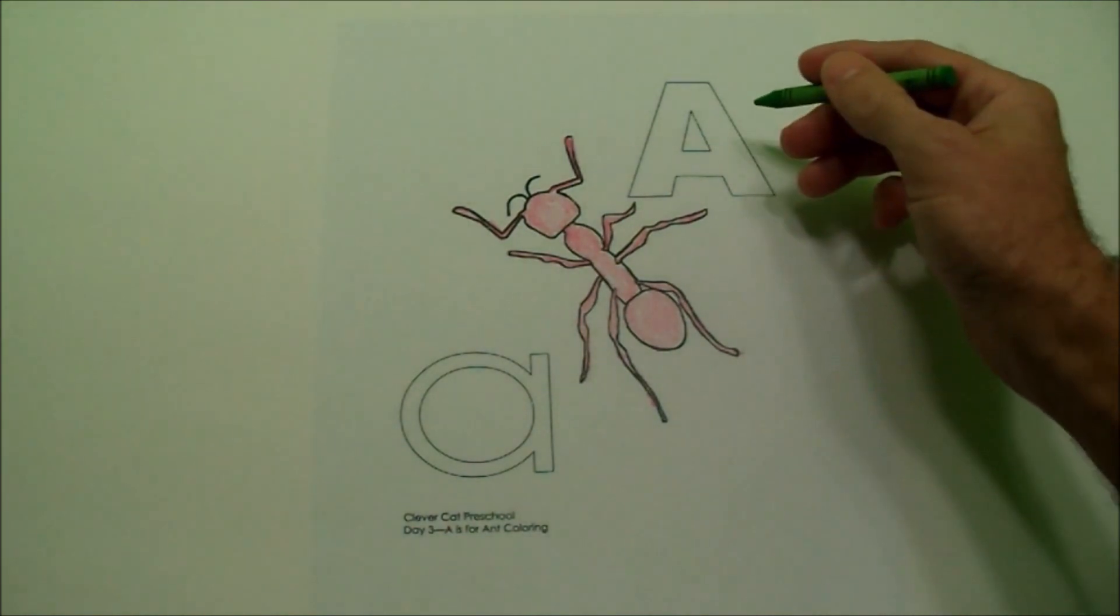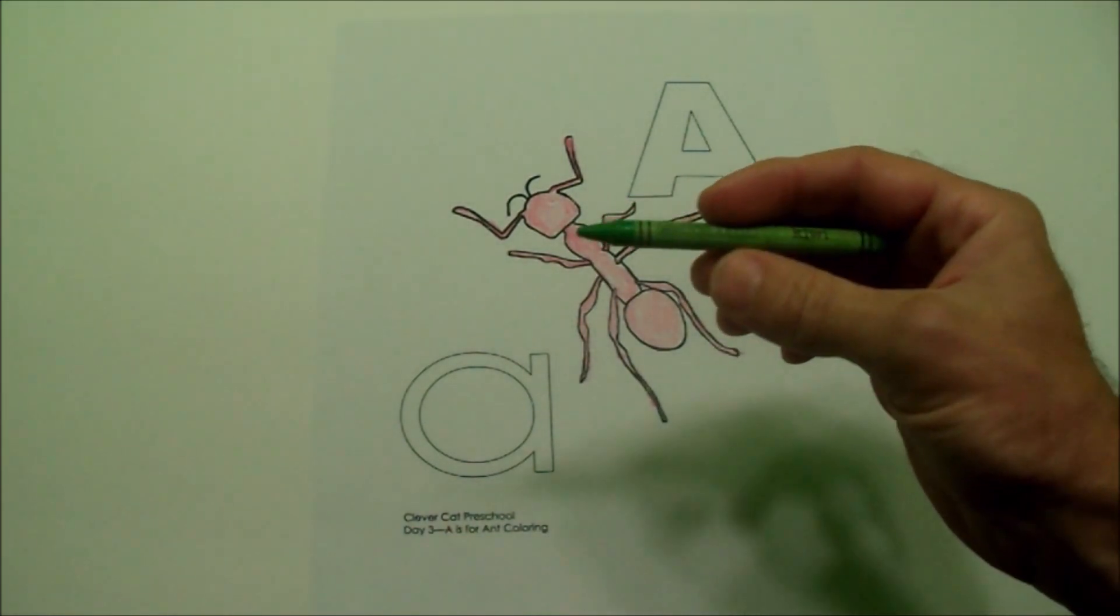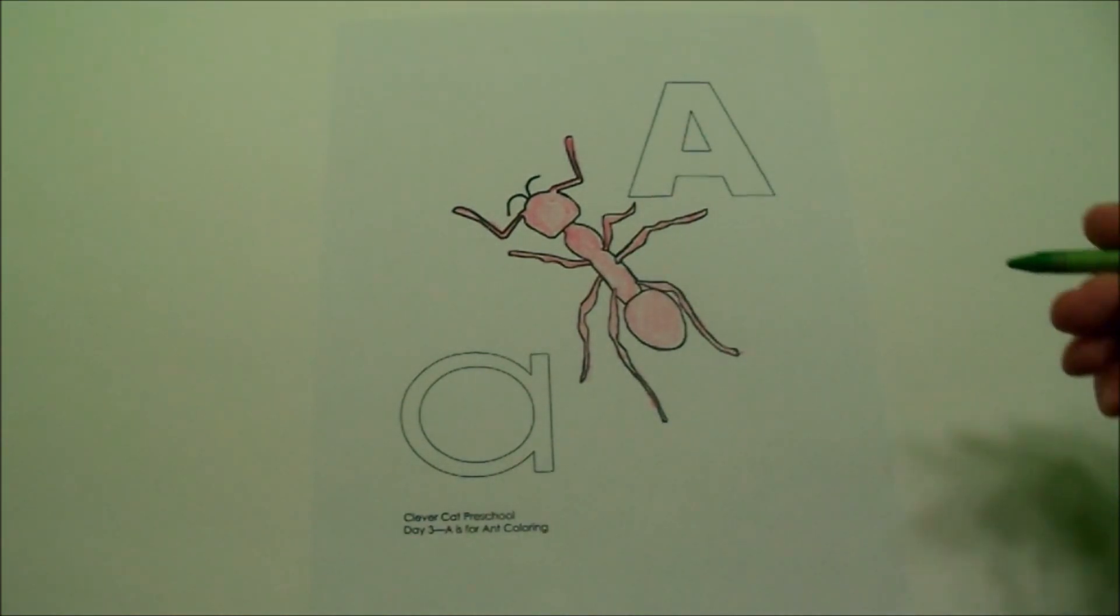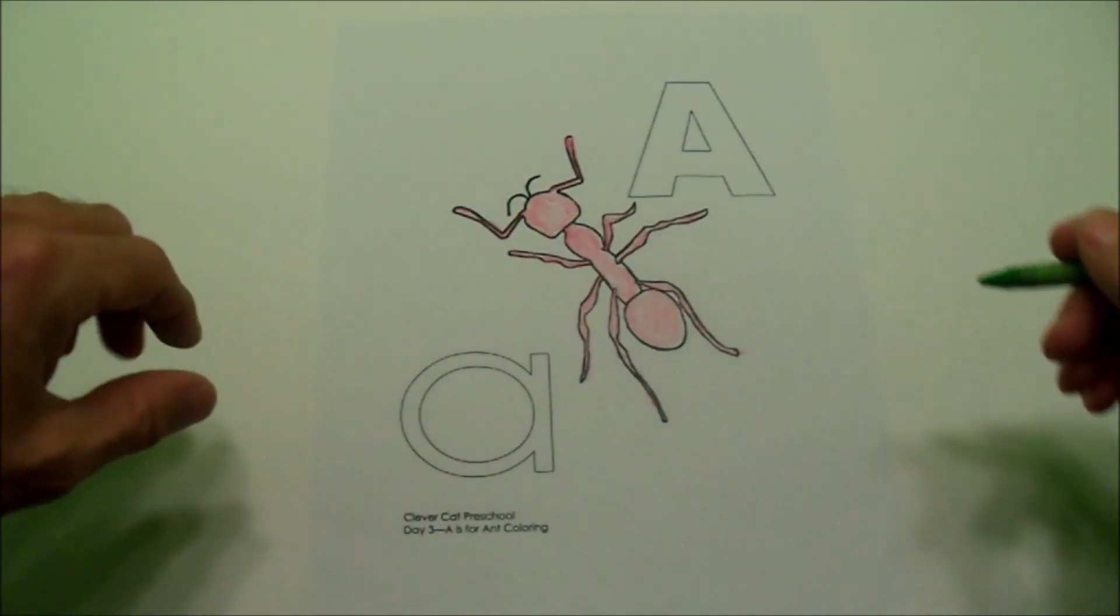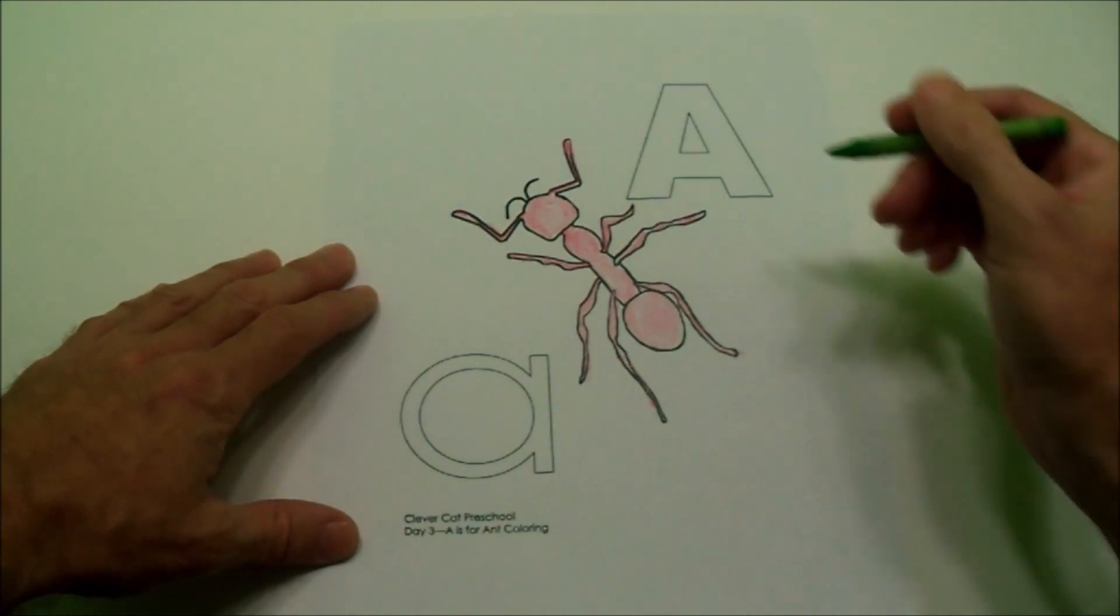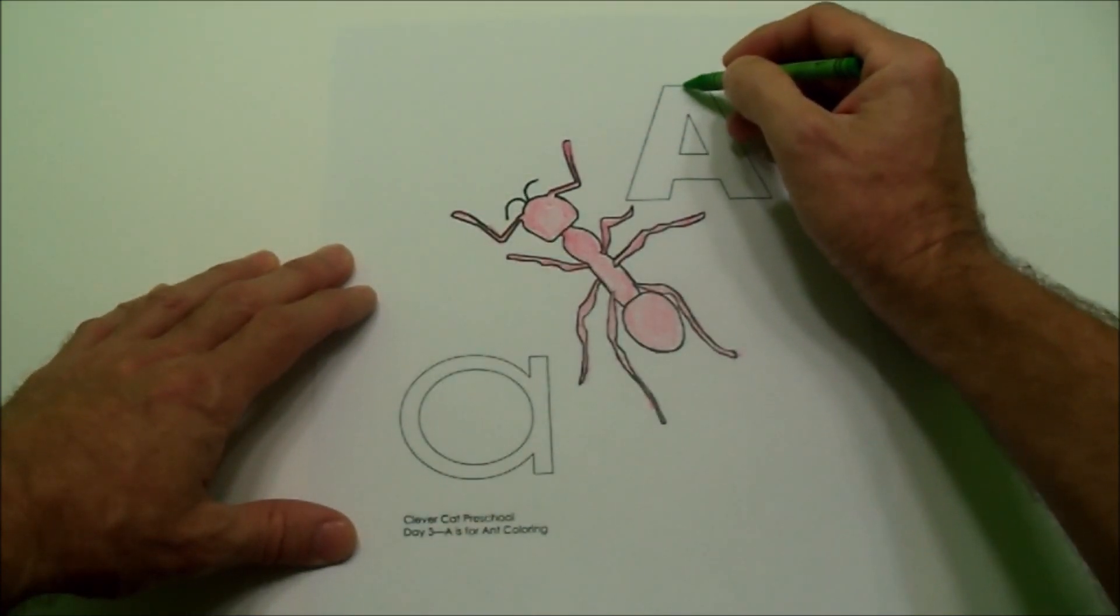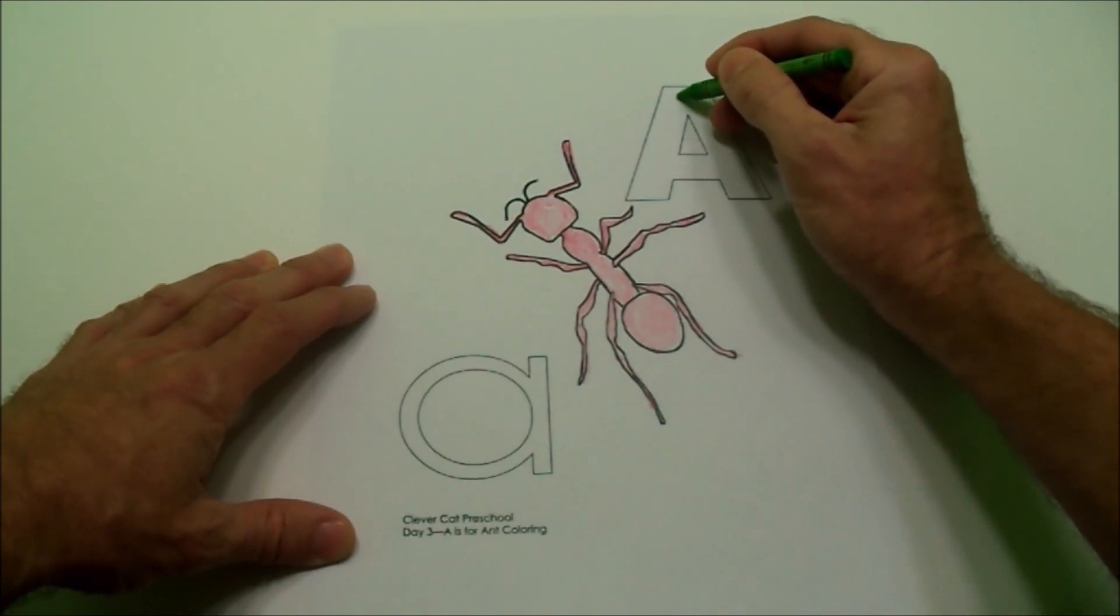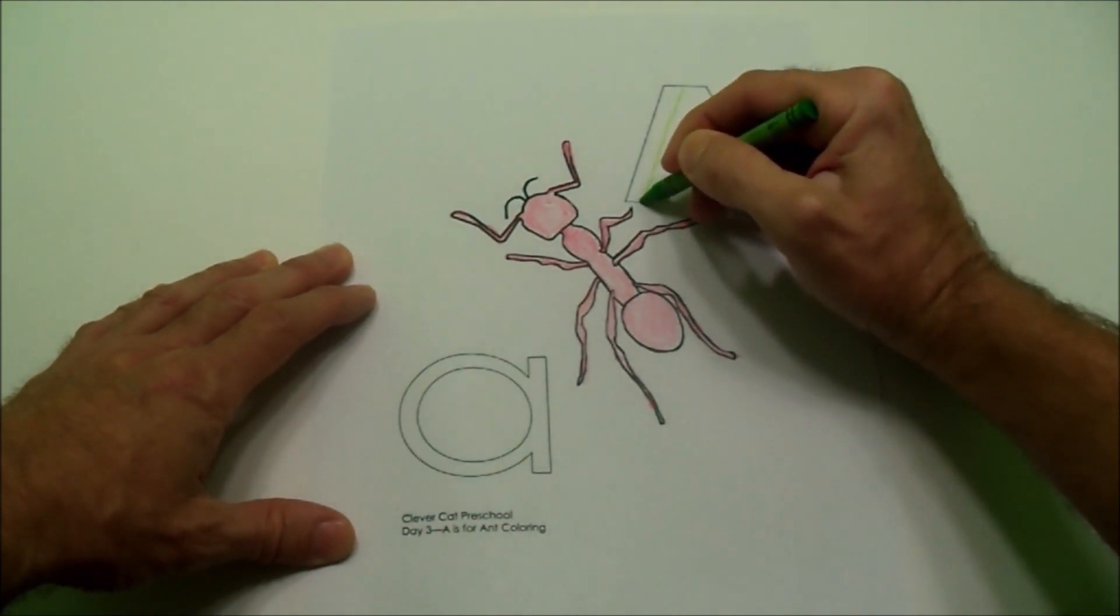Next I am going to color the big letter A green. You can pick any color. And you can pause the video if you need to, to catch up. I am going to hold the paper with my left hand and I will start with the A. And this is how you make a big letter A. You start at the top, come all the way down to the bottom.